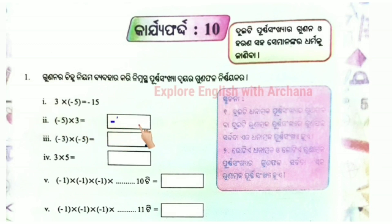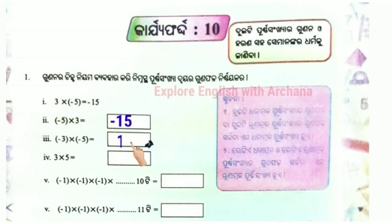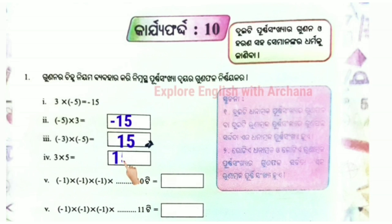Minus 15. Minus 3 into minus 5. Minus minus plus 15. 3 into 5, result is 15.